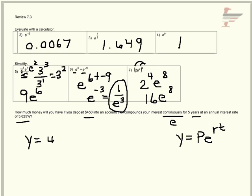And p is your $450 because that's what you're depositing. r is your interest rate, making sure that you do that as a decimal, and then time is your time in years. And then you type that into your calculator.